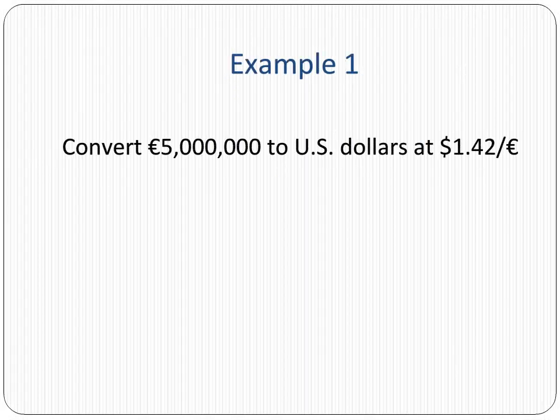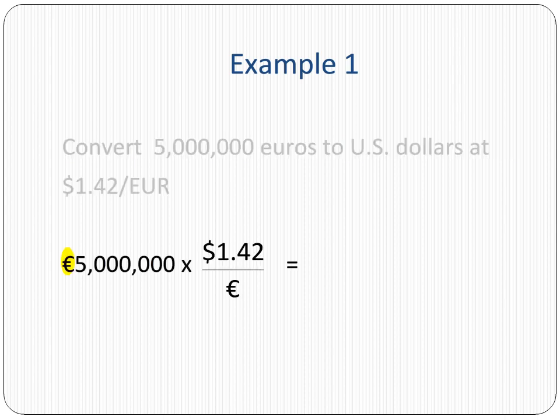In the first example, let's convert an amount of 5 million euros to U.S. dollars at the exchange rate of $1.42 per euro. First, we identify the currency to convert—in this example, it's the euro.